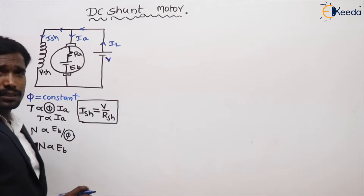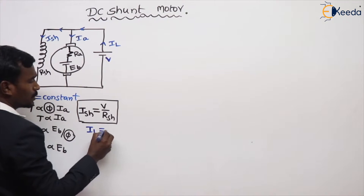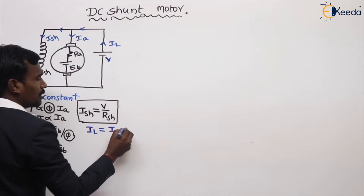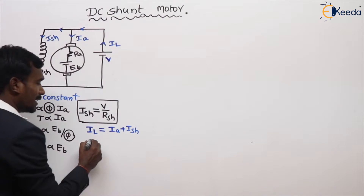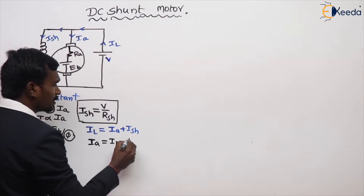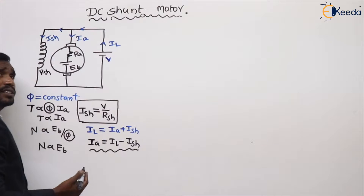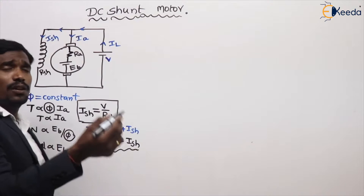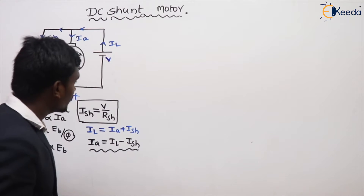The current equations from this circuit: IL equals IA plus ISH. Therefore IA equals IL minus ISH — this is for the motor. Whereas for the generator, IA equals IL plus ISH. So IA equals IL minus ISH is for the DC shunt motor.